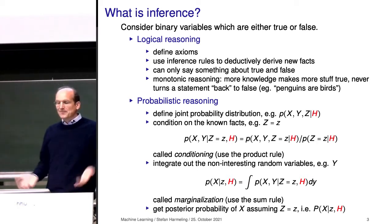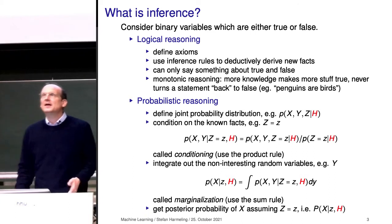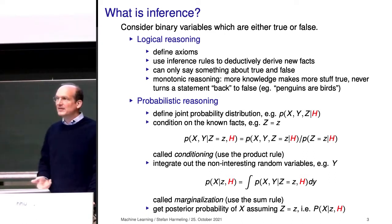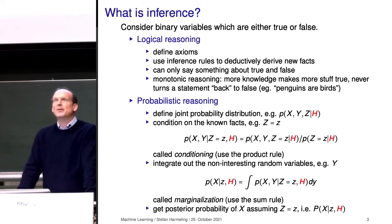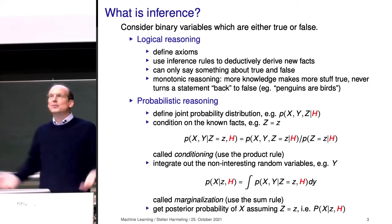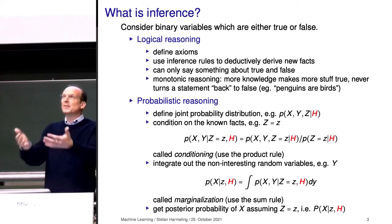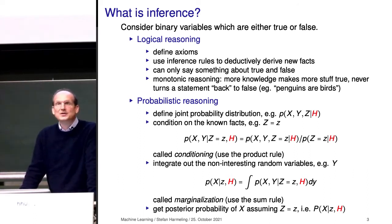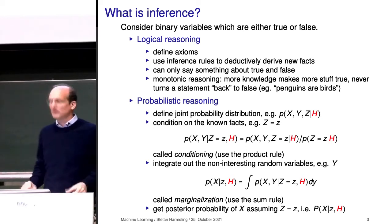If we have some known facts — like variable z equals some value — then we condition on that. Conditioning and observation are synonymous here: if we observe something, those are facts, and on those facts we condition. We put them as a side condition behind the bar, and this changes the probability distribution of the other variables. Similarly to how adding an axiom triggers further statements, by having these additional known facts the probability distribution of x and y changes.